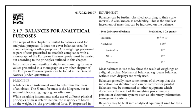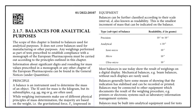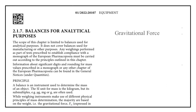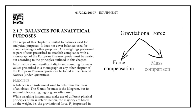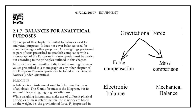A balance is an instrument used to determine the mass of an object. The SI unit for mass is the kilogram, and submultiples such as gram, milligram, and microgram are also used. Different physical principles of mass determination are used during weighing, but the majority are based on gravitational force. The two most common principles are force compensation, used in electronic balances, and mass comparison with a known mass, used in mechanical balances.